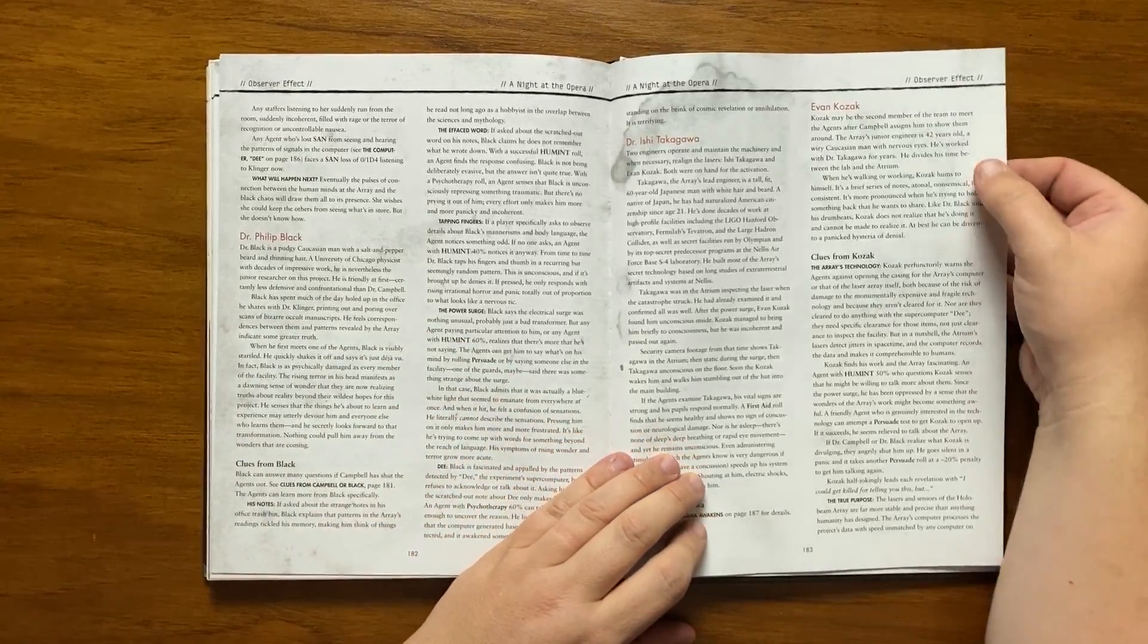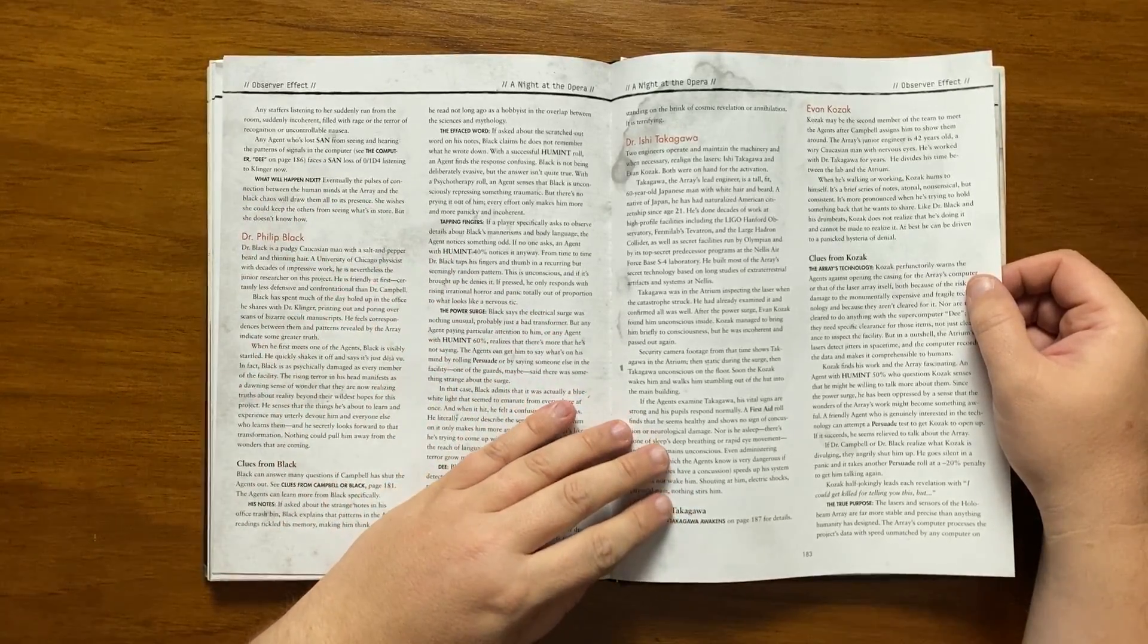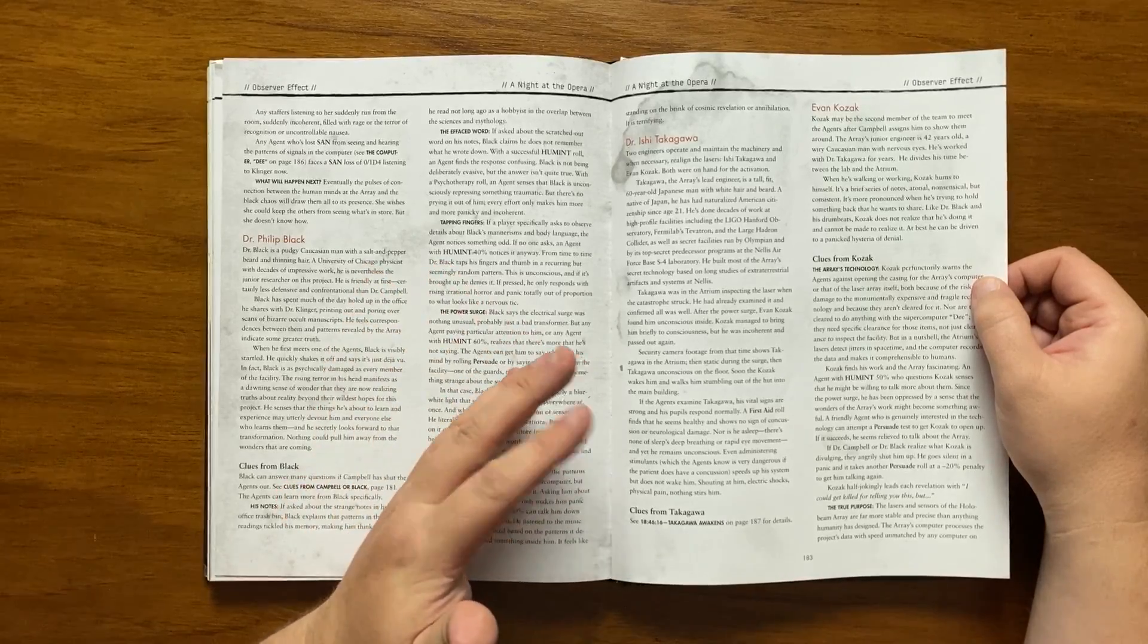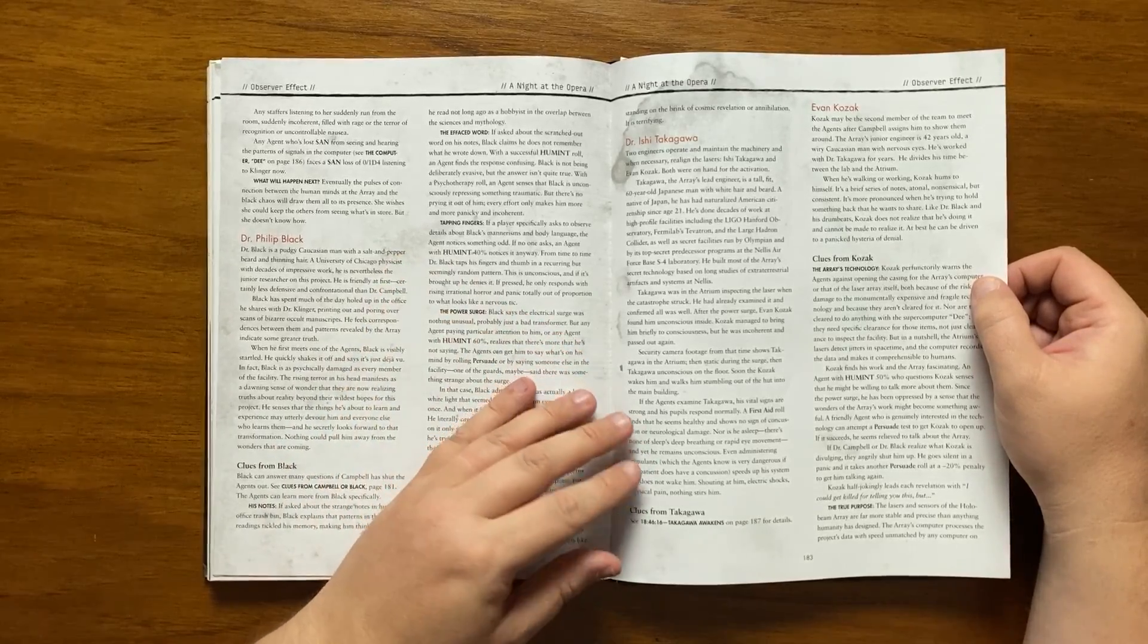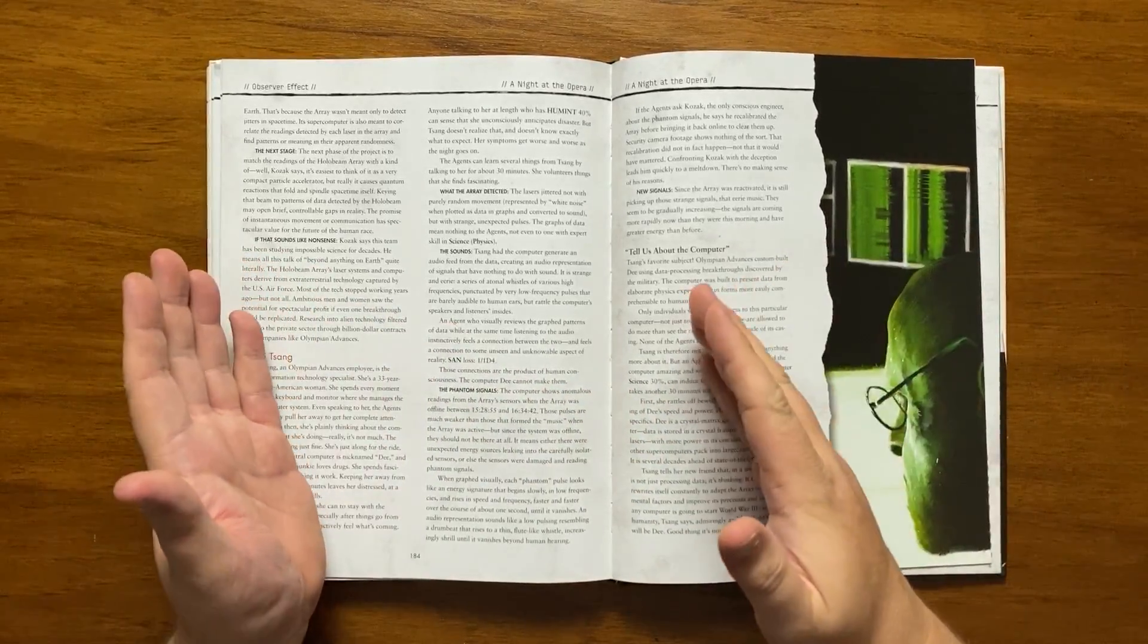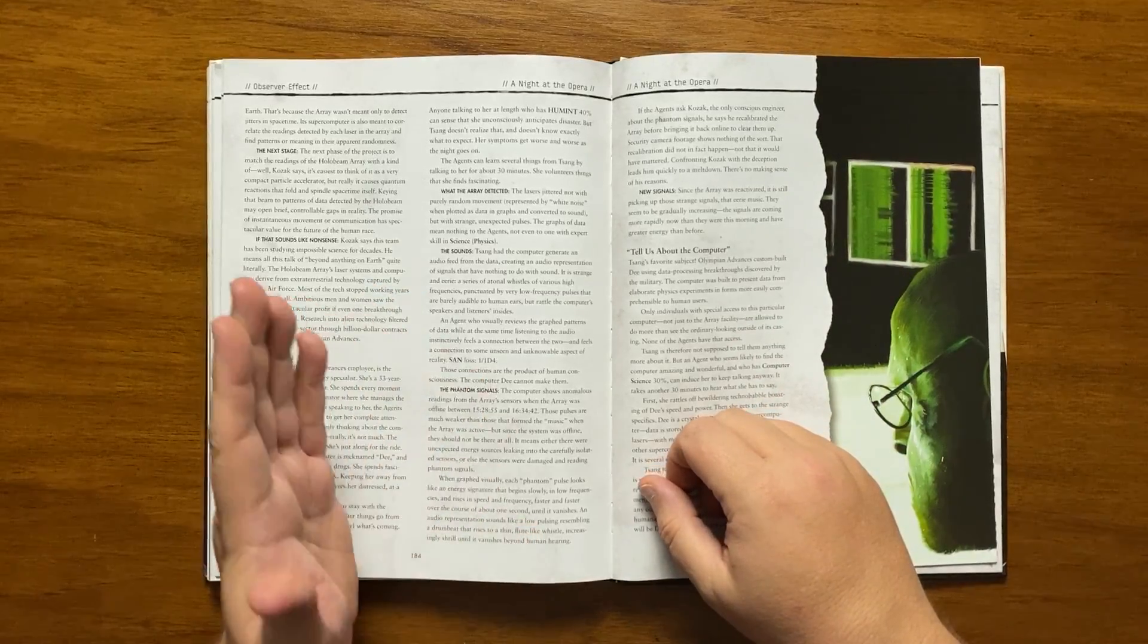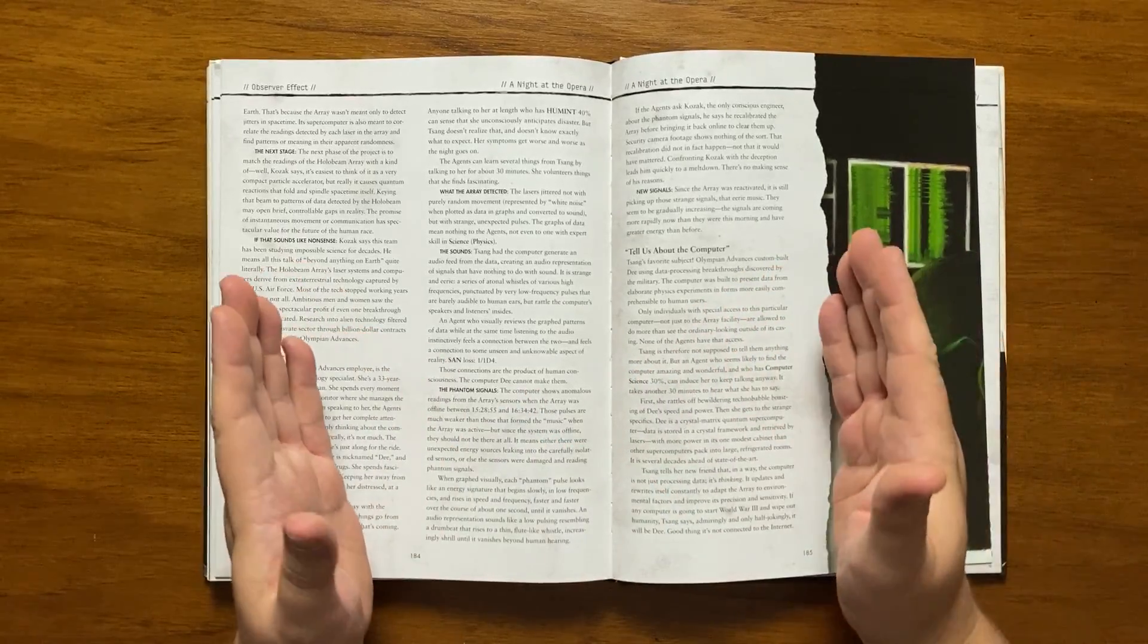Kozak is a 42 year old Caucasian man who is wiry and has nervous eyes. He hums to himself while working, a series of atonal nonsensical notes that remain consistent. He warns the agents against examining D or the array's lasers as they are monumentally fragile and expensive. He finds the work fascinating though since the power surge he has underlying sense that something terrible is underpinning their work. If persuaded to speak about this, he will joke that he could be killed for talking and seems relieved to get it off his chest. The actual true purpose of the array is to detect jitters in space time and find patterns or meaning in them and D is far more advanced than any other computer on earth. The idea is to match the readings to that of a compact particle accelerator that causes quantum reactions to fold time and space and create controllable gaps in reality with the end game being instantaneous movement or communication. Kozak will admit that it sounds like nonsense but it has been studied by the team and deemed possible.